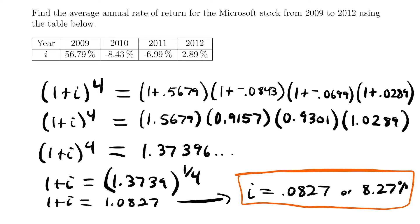Even though in 2009 we had a 56% rate, all these smaller rates really brought it down over the four years to just an average of 8.27%. All that means is if this four-year period had one consistent rate for all four years, it would be 8.27% — and we would have the same amount of growth over this period as we did with the different interest rates.